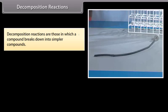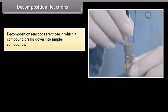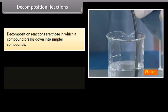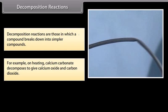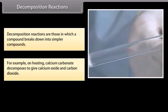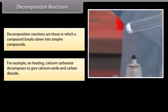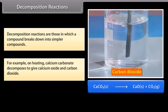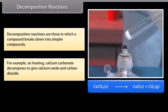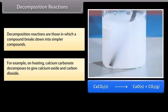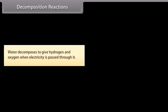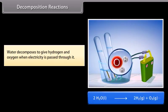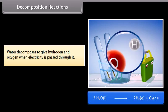Decomposition reactions: These are reactions in which a compound breaks down into simpler compounds. For example, on heating, calcium carbonate decomposes to give calcium oxide and carbon dioxide: CaCO3 → CaO + CO2. Water decomposes to give hydrogen and oxygen when electricity is passed through it.